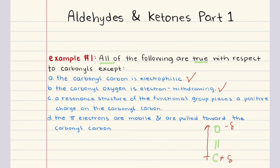Option C states that a resonant structure of the carbonyl group places a positive charge on the carbonyl carbon. This statement is correct as well. One of the key resonant structures involves the movement of pi electrons towards the oxygen, resulting in a negative charge on the oxygen and a positive charge on the carbon. So C is true.